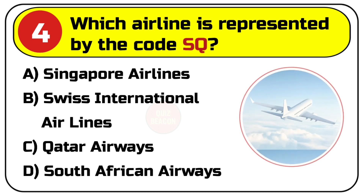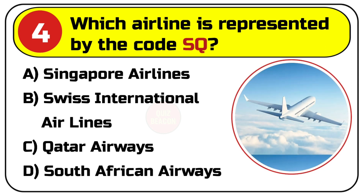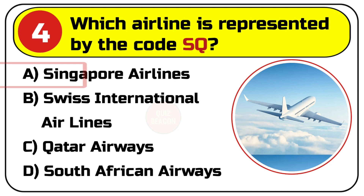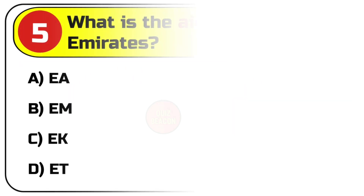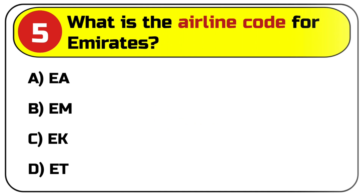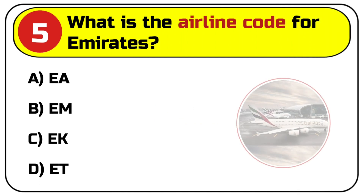Question number four: which airline is represented by the code SQ? Options are A. Singapore Airlines, B. Swiss International Airlines, C. Qatar Airways, D. South African Airways. Correct answer is A. Singapore Airlines.